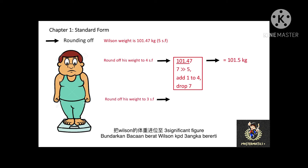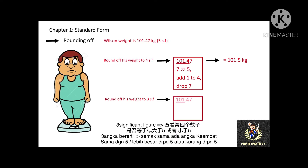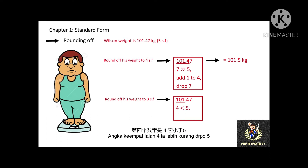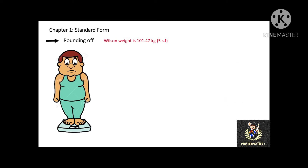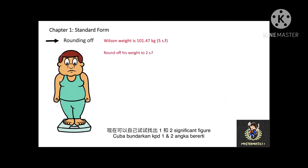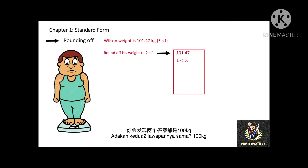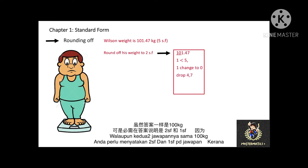One more example. I want to round off Mr. Wilson's weight to 3 significant figures. Now I look at the fourth digit, which is 4, and 4 is less than 5. Therefore, we drop the number 4, and in 3 significant figures the answer is 101 kg. Can you round off Mr. Wilson's weight to 2 significant figures and 1 significant figure? Both answers are 100 kg.